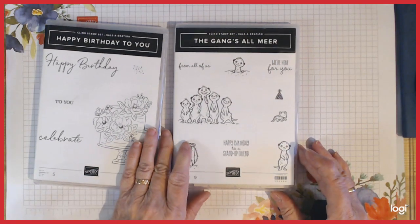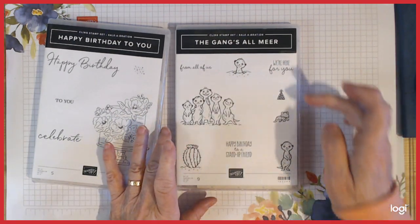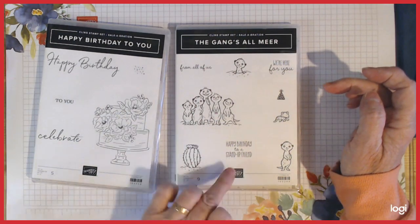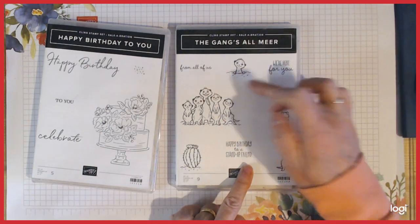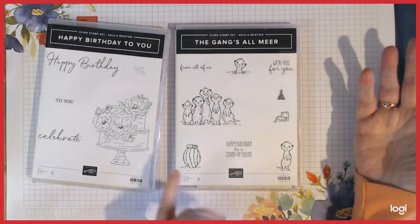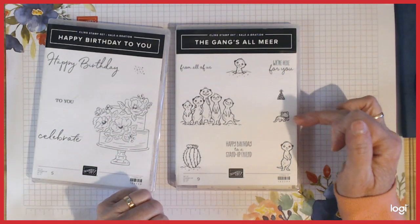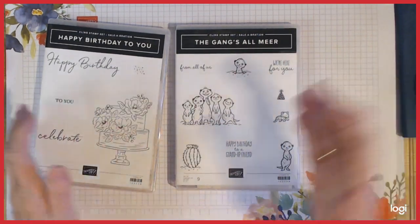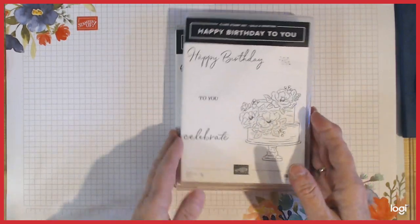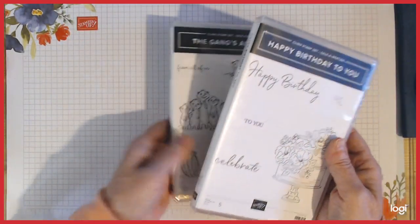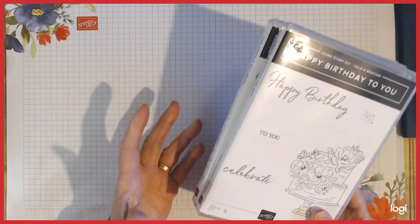This one I think is going to be popular with a lot of people - it is so cute. We're Here For You, From All of Us, Happy Birthday to a Stand-Up Friend - and this with the cactus peeping up out of it. You're going to have so many uses. They're free when you spend £45. You can pick from loads of other choices, and there's choices if you spend over £90 where there's dies and papers and stuff.